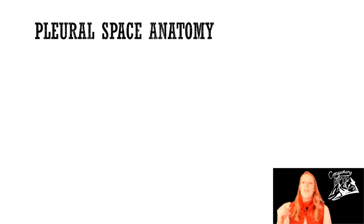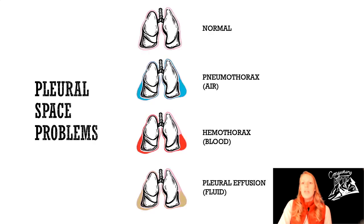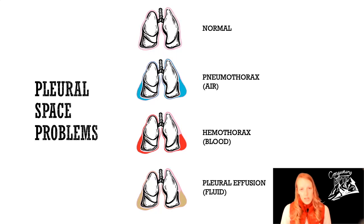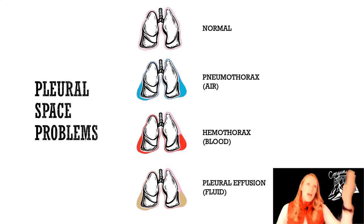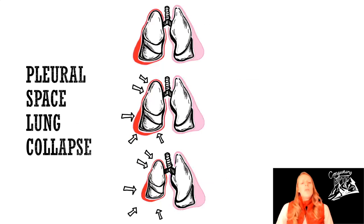When things like fluid, blood, or air fill that space, we get problems. Here's an image of the three pleural problems to know for the NPTE. Pneumothorax is air in the pleural space, hemothorax is blood in the pleural space, and pleural effusion is some sort of fluid in the pleural space. Breaking apart the words makes it easy: 'pneum' is air, 'hemo' is blood, and 'effusion' implies fluid or swelling.